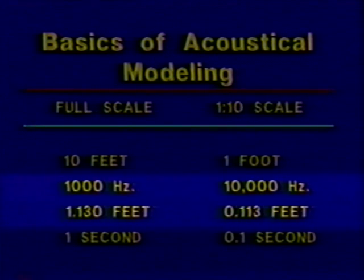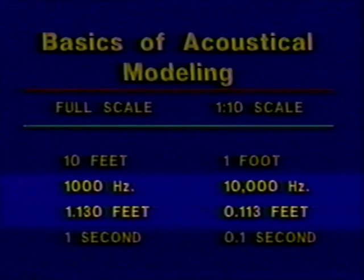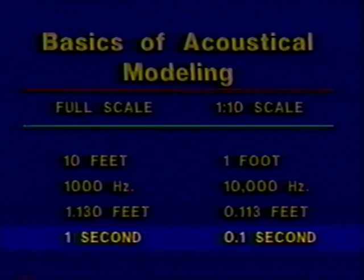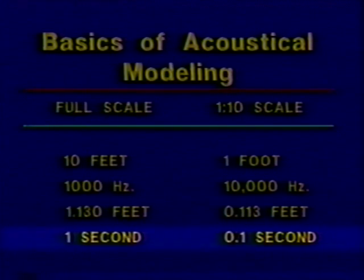In a model that is 1/10 full size, the frequency would be increased by a factor of 10, which would result in wavelengths being reduced by a factor of 10. For example, a sound with a frequency of 1,000 Hertz in a full size room with a wavelength of 1.13 feet would become a sound with a frequency of 10,000 Hertz with a wavelength of 0.113 feet in our scale model. Similarly, events that occur in time are also reduced by the scale factor. Sound travels the same velocity in the scale model as in the full size room, but the distance has been reduced by the scale factor, so sound waves in the scale model will arrive at the microphone in 1/10 of the time. We're going to be measuring both very short periods of time and very high frequencies.